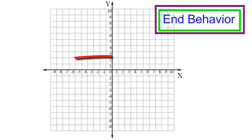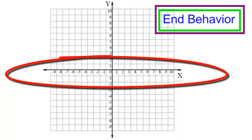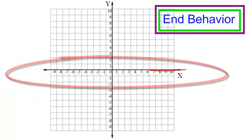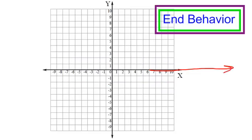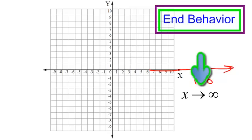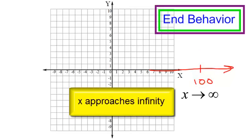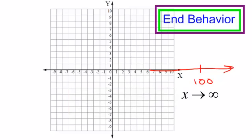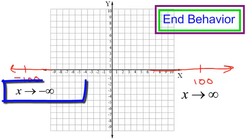Look at your graph. You see your X's? As I look to the right of my graph, my X's are going to get bigger and bigger. They could be 100, they could be 200, they could be a million. They are going to go on and on and on. As I look to the right of my graph, they are going to approach infinity. That little arrow means approach. Can I ever get to infinity? No. I'm going to approach infinity.